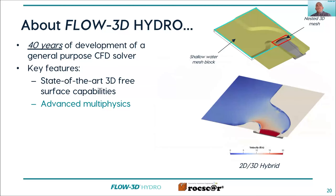We also have the ability to combine with a two-dimensional mesh block within the same domain. Our focus is 3D modeling, but there are cases where you want to extend your model further upstream or downstream. Doing that with a full 3D grid would be very computationally intensive. In this case we're looking at a 3D spillway, but we want to capture the approach flow — we can do that in a 2D mesh block without taking up as many computational resources.